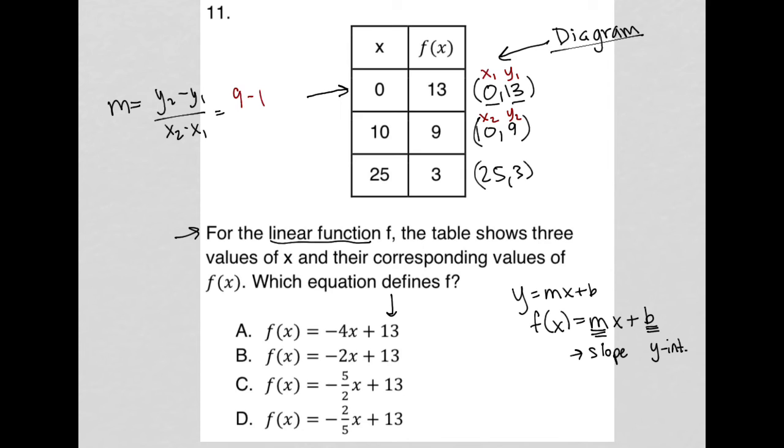So that turns into a 9 minus 13 for my numerator and a 10 minus 0 for my denominator. 9 minus 13 is negative 4. 10 minus 0 is 10.